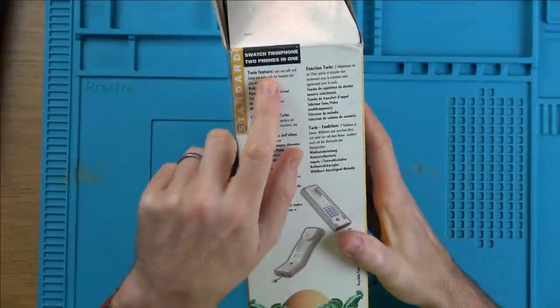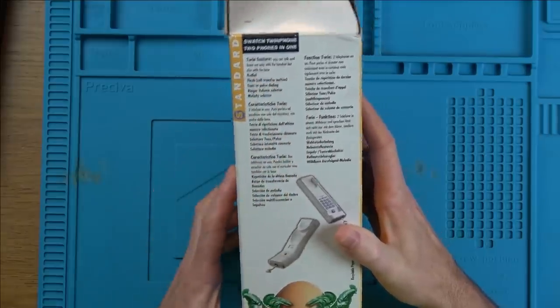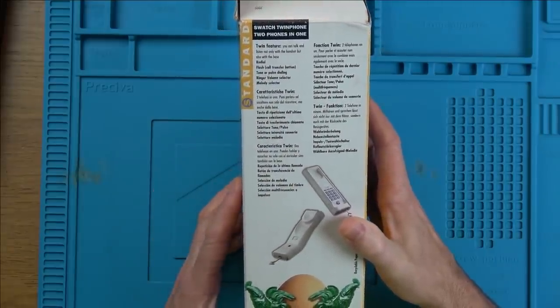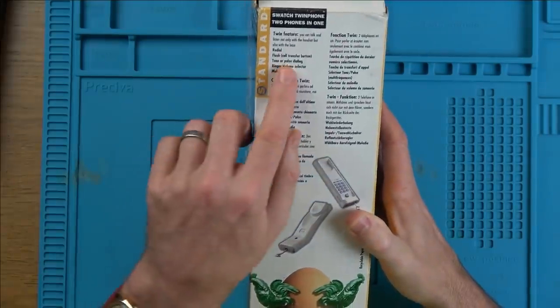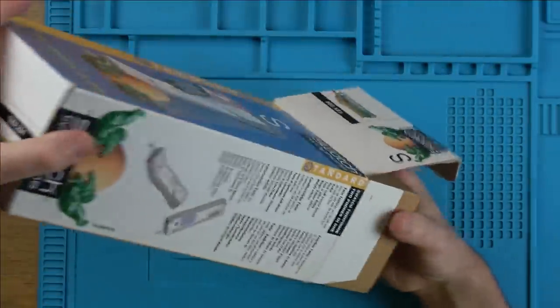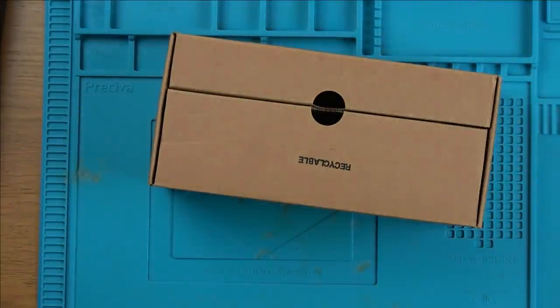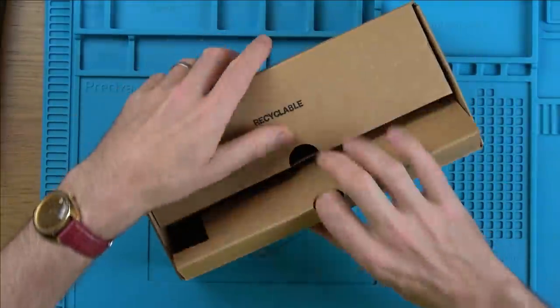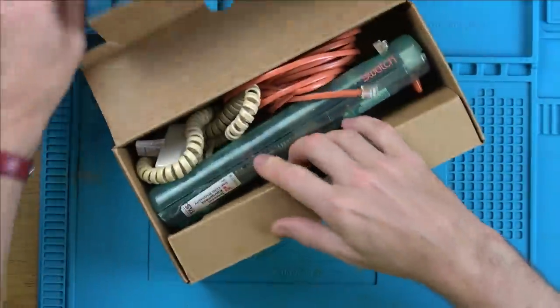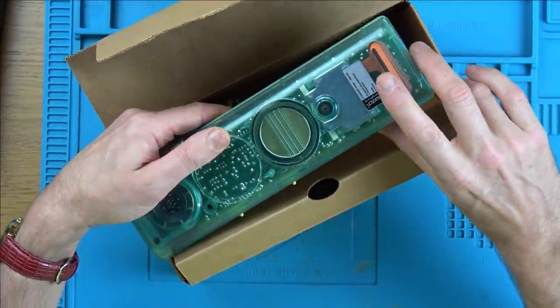Oh look, twin feature. You can talk and listen not only with the handset, but also the base. So that's just going to be like speakerphone. Yeah, tone or pulse dialing. Pulse dialing, I think it's... Is it Virgin Media now? They're not supporting pulse anymore. I've gone away from it now. But pulse dialing was when you used to do the same as doing the receiver on and off.